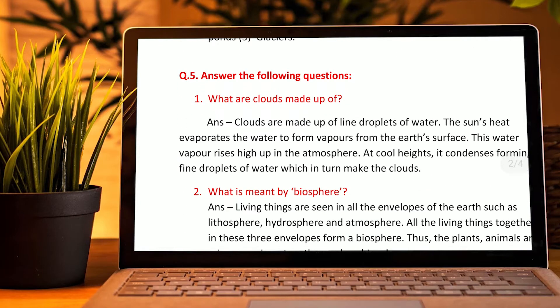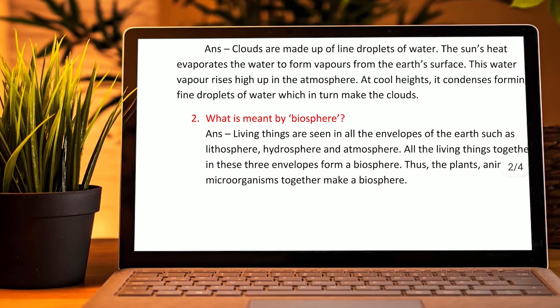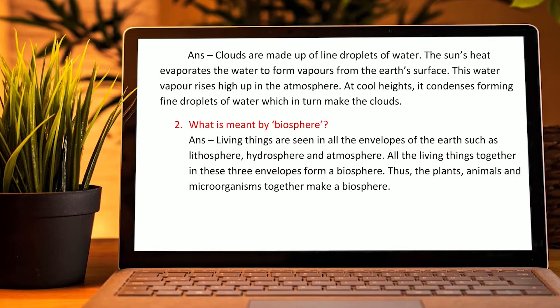Fifth: answer the following questions. What are clouds made up of? Clouds are made up of tiny droplets of water. The sun evaporates water from the earth's surface in the form of water vapour. This water vapour rises up in the atmosphere, and at cool heights it condenses, forming fine droplets of water which in turn make the cloud.